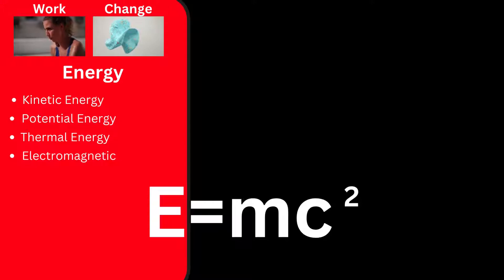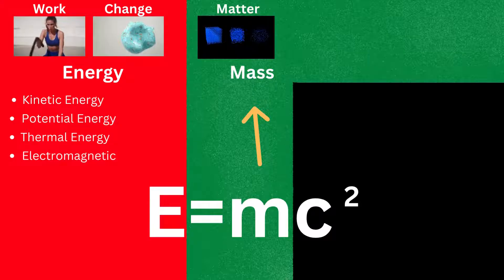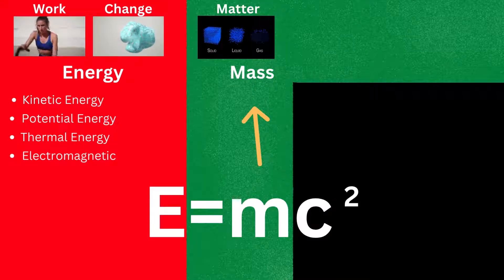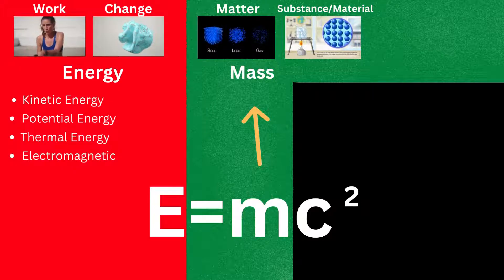Now for the next letter in the equation, m. M, meaning mass, is basically referring to matter. In other words, this indicates how much substance or material there is in any object.